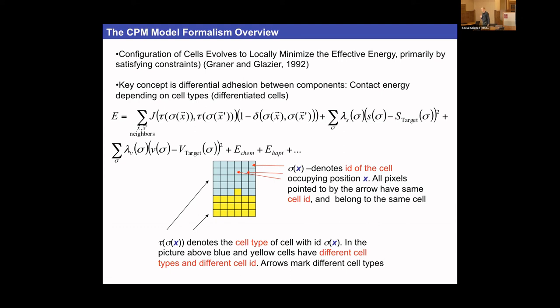We're not strictly conserving energy here because we can have terms like chemotaxis where we put a gradient, and a cell going down a concentration gradient would continuously lower its energy. With periodic boundary conditions, energy keeps going down, so this is not really a conservative system. We can group quasi-energy terms like chemotaxis together with conservative energy terms.